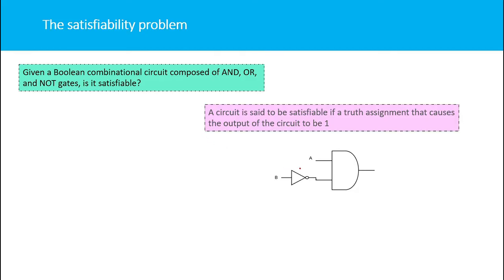Consider this boolean circuit with two inputs a and B. We are negating B using a NOT gate and giving a and NOT-B as inputs to an AND gate. If you give both a and B as zero, the output will be zero, because a is zero and NOT-B is one, and zero AND one is always zero. But if you give a as one and B as zero, the output will be one because NOT-B is one, and one AND one is one.